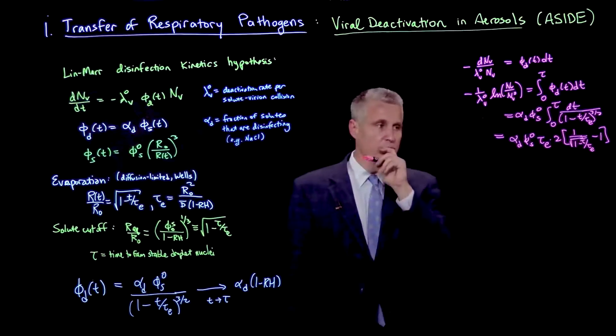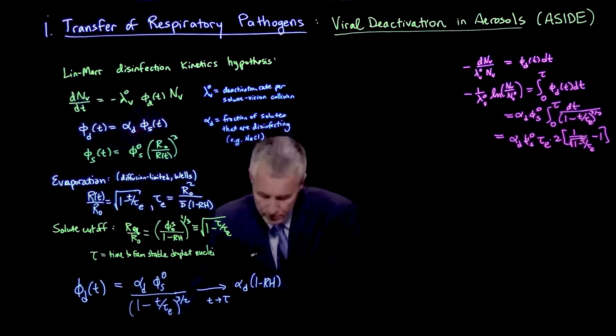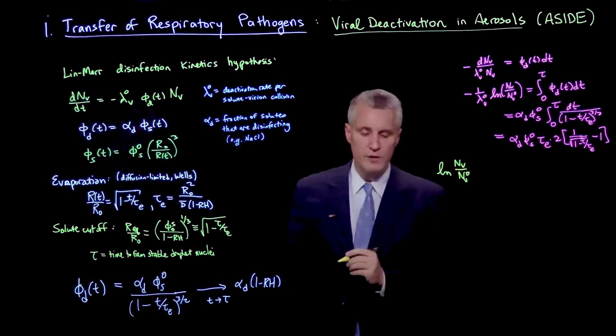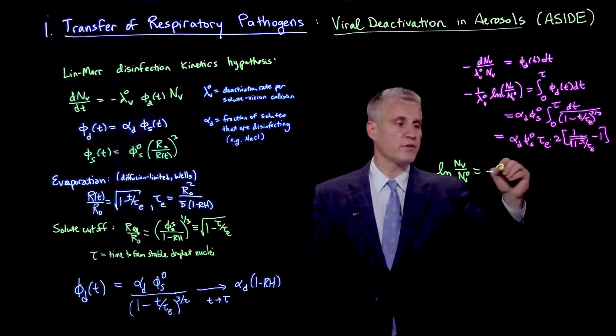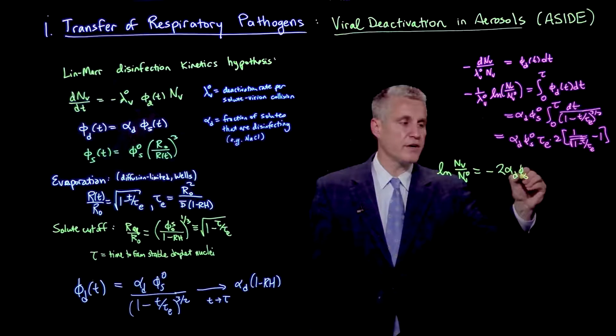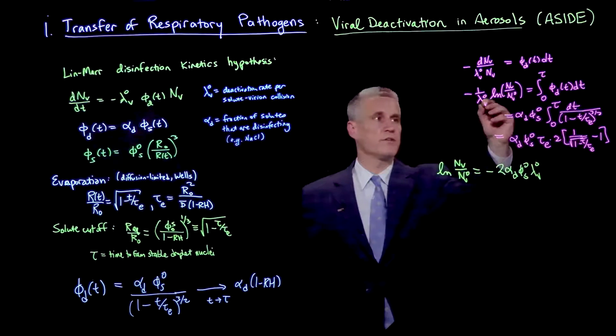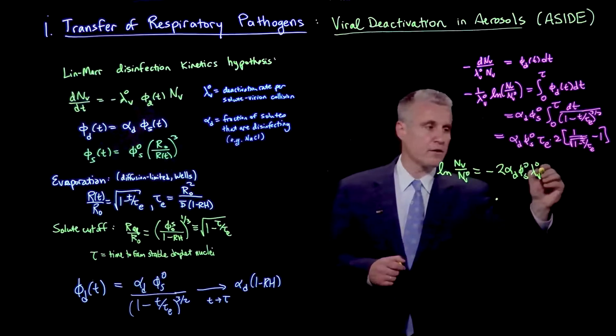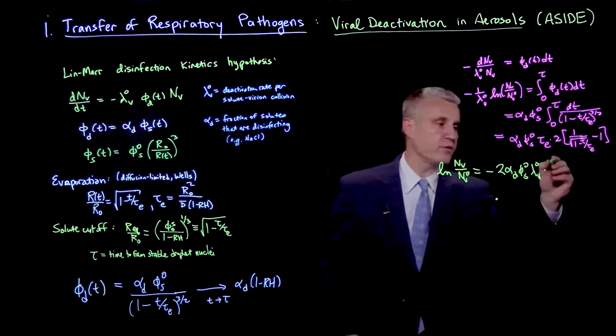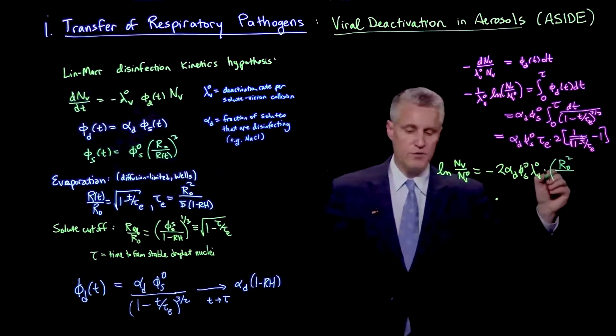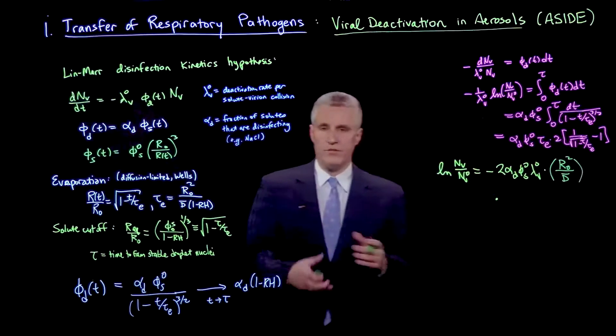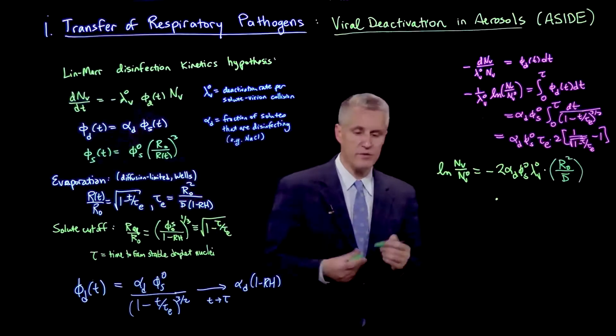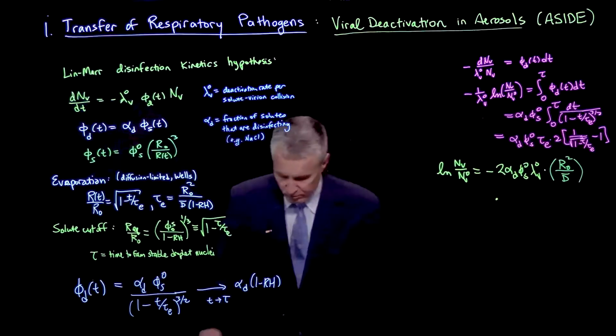Putting all this together, we can write the viability. We can write the log of nv over nv0 as minus 2 alpha d phi s 0 lambda v0, putting the lambda v0 back on the other side with the minus sign. Then we have times two factors. First, there is the factor which we know has units of time, which is r0 squared over d bar. That's essentially kind of a water vapor diffusion time that comes into the evaporation time tau e. That sets the time scale here.